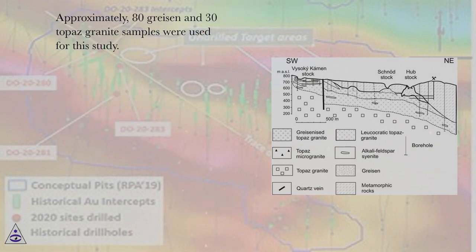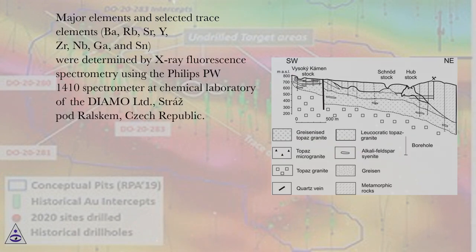Approximately 80 greisen and 30 topaz granite samples were used for this study. Major elements and selected trace elements Ba, Rb, Sr, Y, Zr, Nb, Ga, and Sn